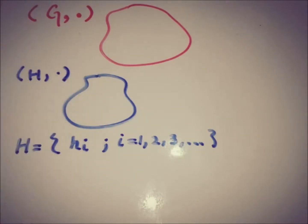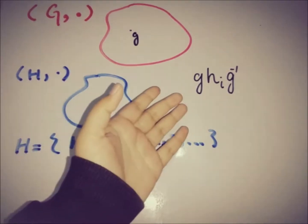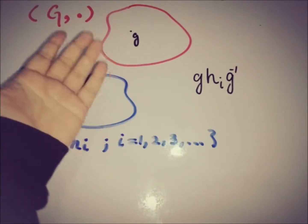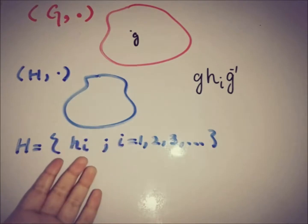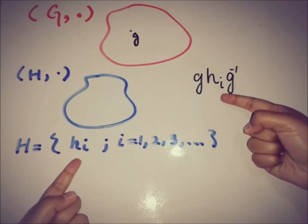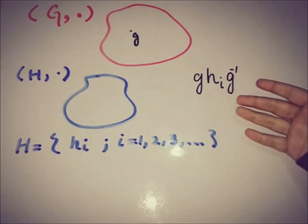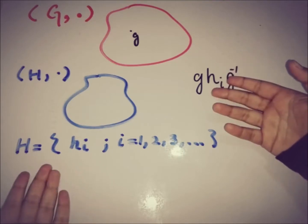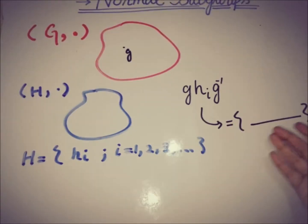We take any element g from G. The combination of elements of the subgroup and the group gives us: g times H_i times g-inverse, where H_i is an element of the subgroup and g-inverse is also an element of the group. This is a transformation. By replacing elements of H — H1, H2, and so on — we get another set, and this will be the conjugate subgroup.